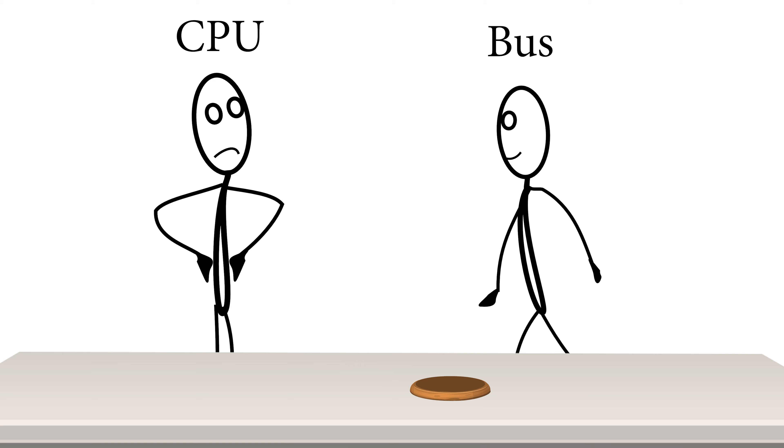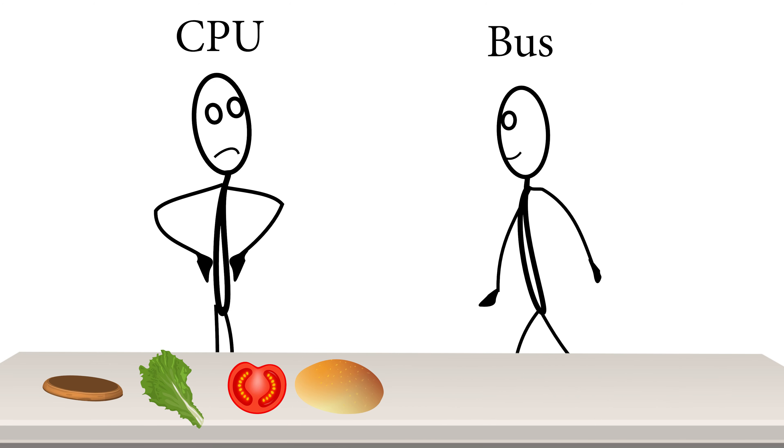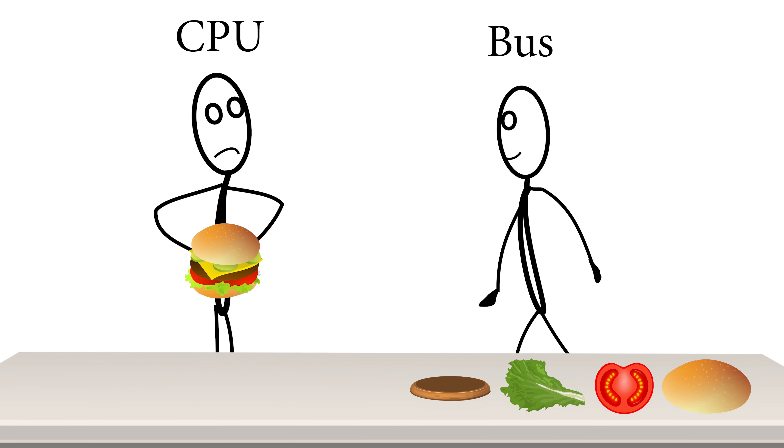I like to imagine the bus and the CPU as workers at a restaurant. The bus is handing the CPU all the ingredients to make a burger — tossing patties, lettuce, tomatoes, and buns at the CPU to assemble the burger and hand it out.